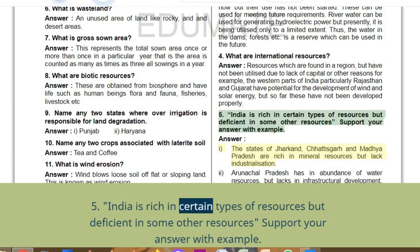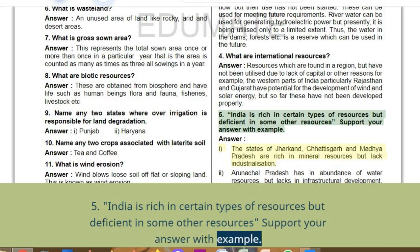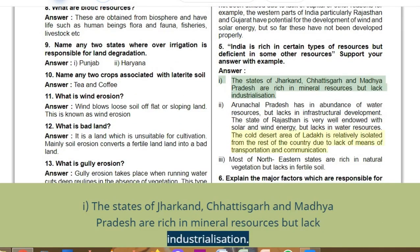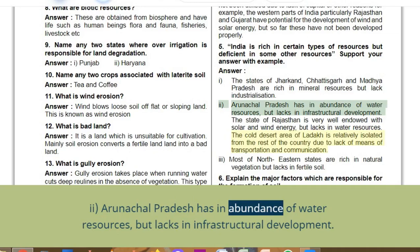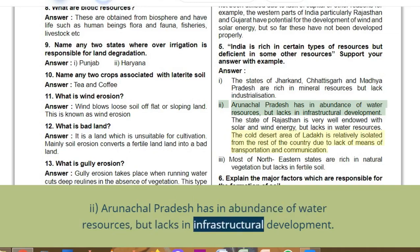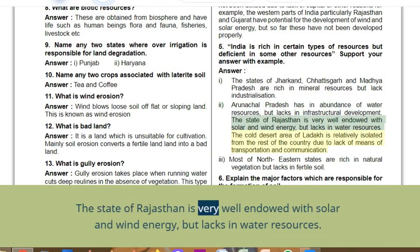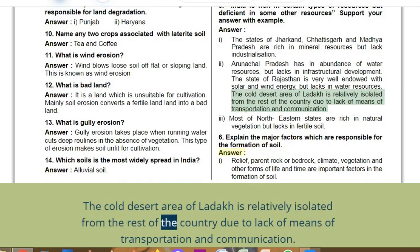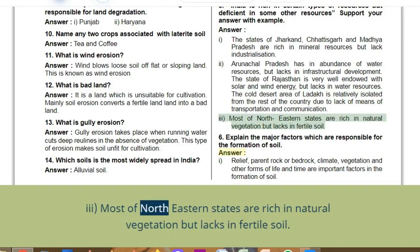Q5: India is rich in certain types of resources but deficient in some others. Support with examples. Answer: The states of Jharkhand, Chhattisgarh, and Madhya Pradesh are rich in mineral resources but lack industrialisation. Arunachal Pradesh has an abundance of water resources but lacks infrastructural development. Rajasthan is well endowed with solar and wind energy but lacks water resources. The cold desert of Ladakh is relatively isolated due to lack of transportation and communication. Most northeastern states are rich in natural vegetation but lack fertile soil.